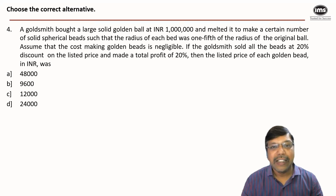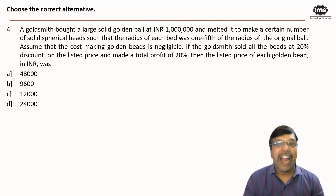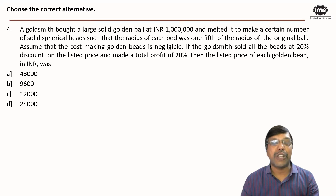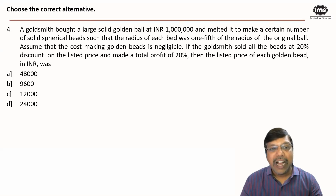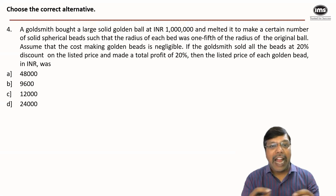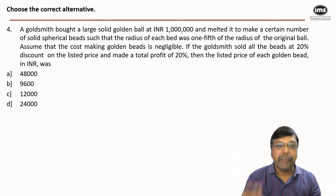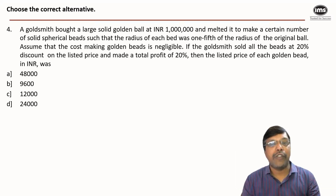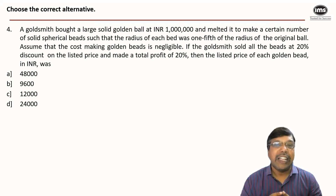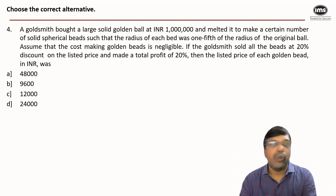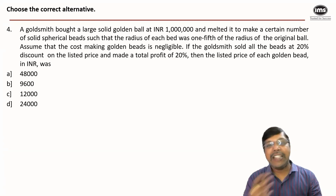Let's see question number four — it's a beautiful question that combines the concept of mensuration and profit/loss. If we are familiar with the concepts of these two topics, then this question wouldn't be difficult to solve. A goldsmith bought a large golden ball at ten lakh rupees, melted it to make a certain number of solid spherical beads such that the radius of each bead was one-fifth of the radius of the original ball. When a large ball is melted into smaller spherical shaped balls, what remains unchanged is the volume.